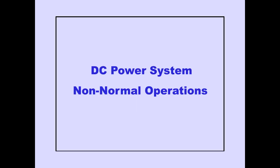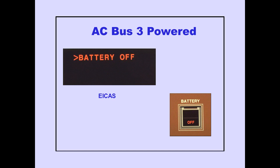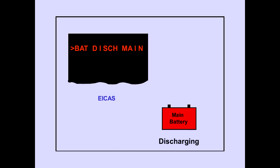Now let's discuss DC power system non-normal operations. The ICAS advisory message 'battery off' is displayed when the battery switch is off and AC bus 3 is powered. The off light in the battery switch also illuminates. The ICAS advisory message 'battery discharge main' is displayed if the main battery is discharging.